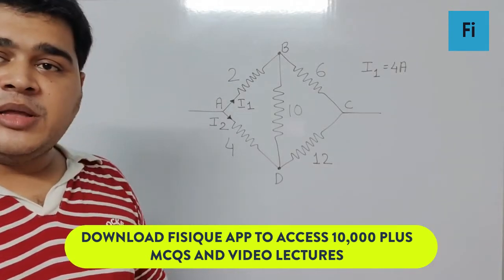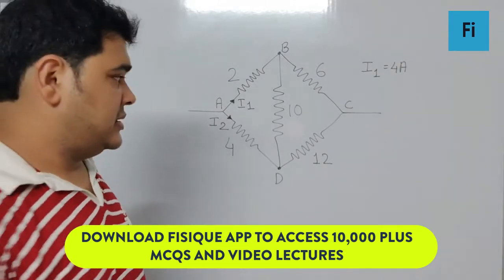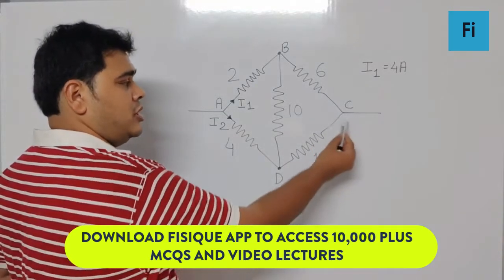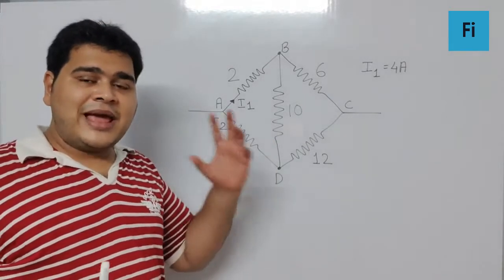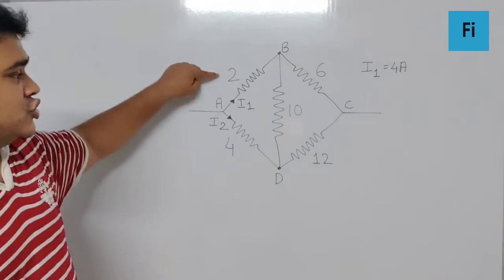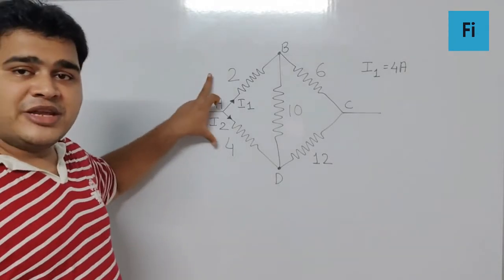The potential difference between points D and C, that is across the 12 ohm resistor, this is what we are looking for. Now if you look at the diagram carefully, this is 2 and 4. If you take the ratio, it...